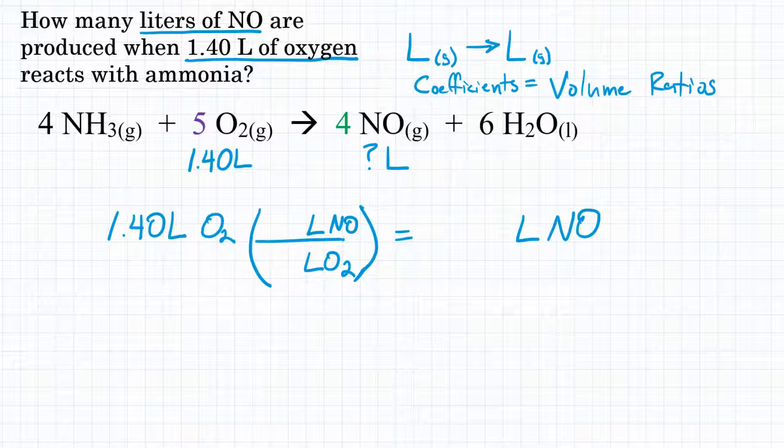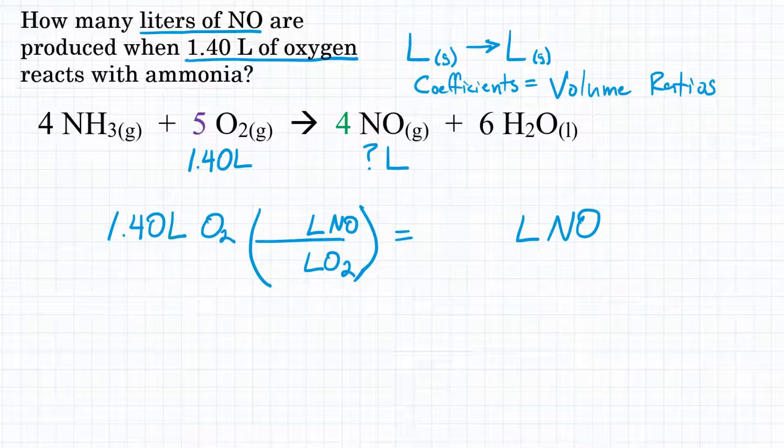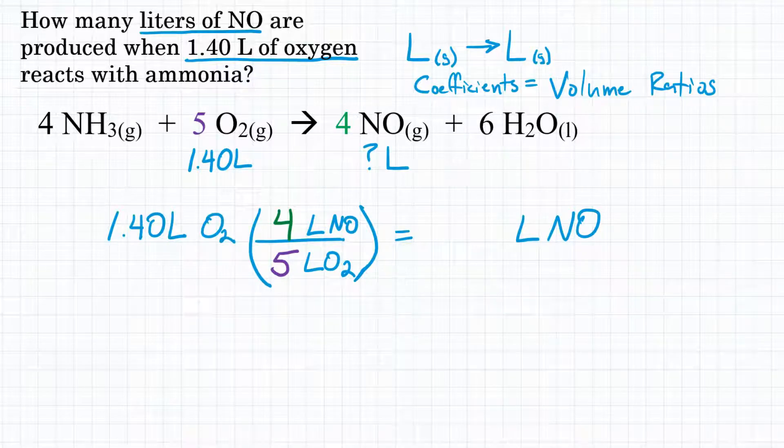Our volume ratios, our coefficients, are what we'll put in front here. For liters of O2, we have 5. For liters of NO, we have 4. So for every 5 liters of O2, we produce 4 liters of NO.